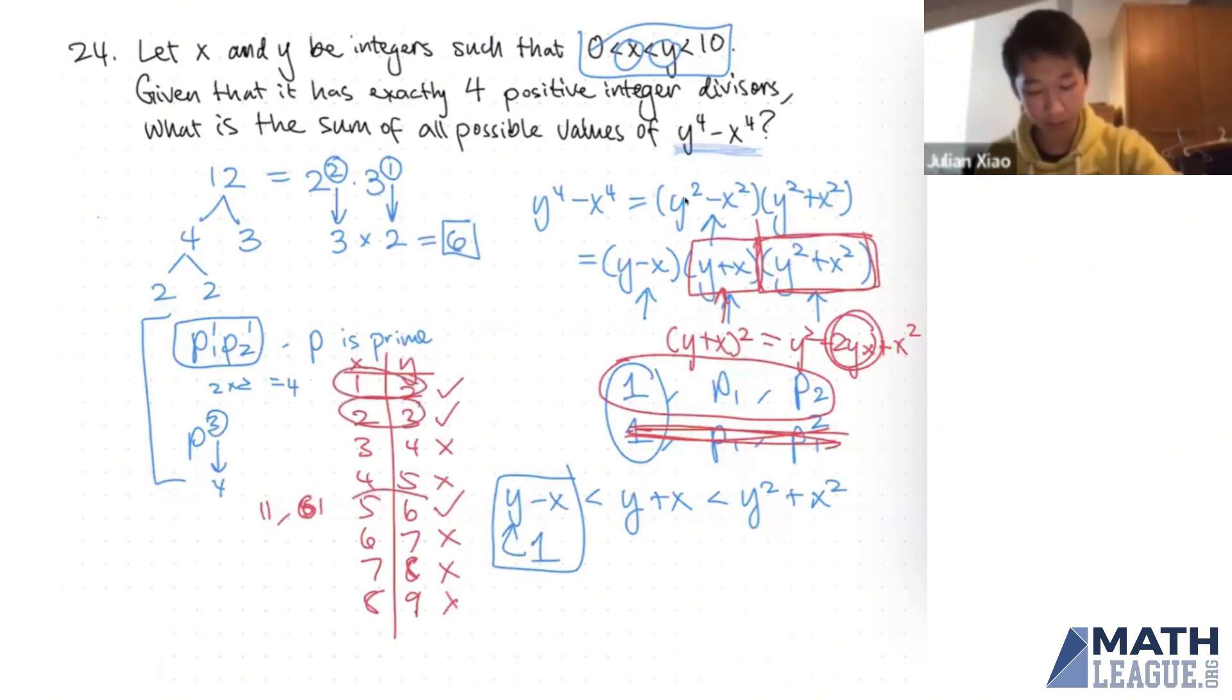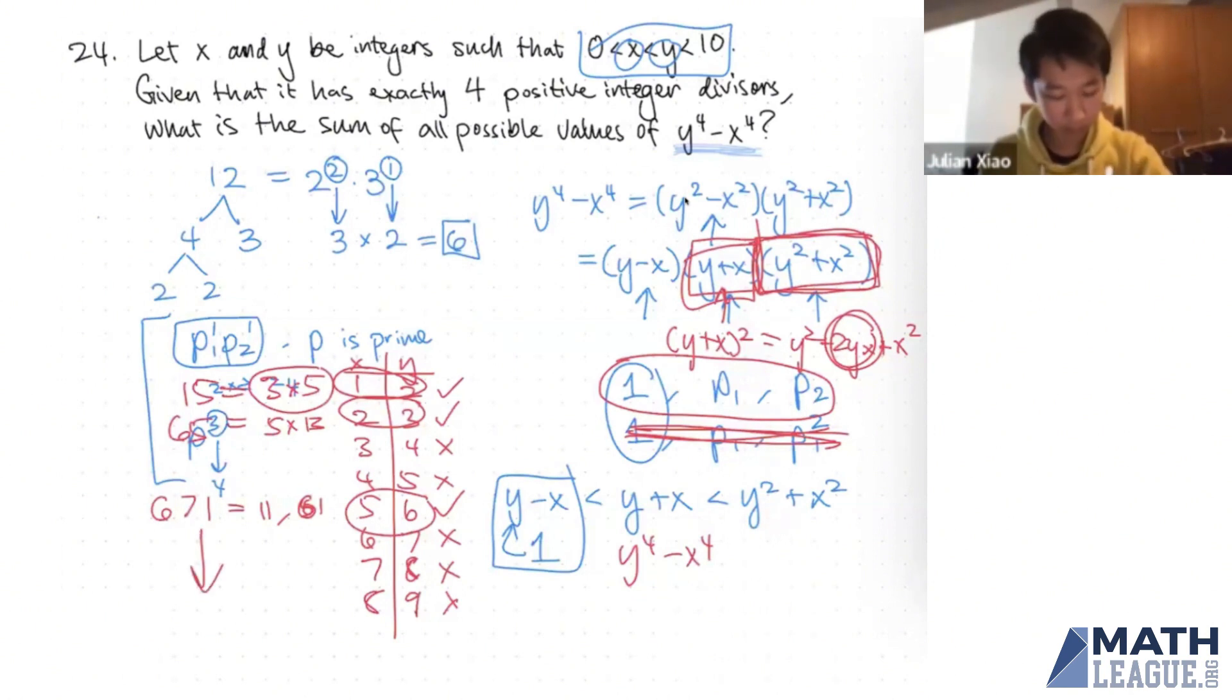We have 1 and 2, 2 and 3, 5 and 6. So now all you need to do is calculate y to the 4 minus x to the 4 for each of those. And just to save a little bit of time, if you've already calculated both of these quantities, x plus y and y squared plus x squared, you can just multiply these together. So that gives you 15. This right here gives you 5 times 13, which is 65. And this gives you 671. So now, if you add all of these together, that will give you the final answer, which I believe, if I did my math correct, should be 751. That's your final answer.